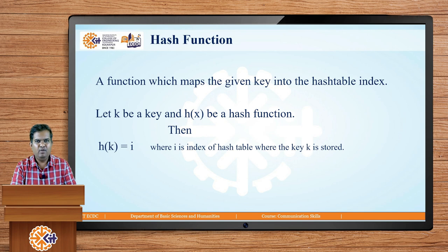The function which maps the given key into a hash table index is called the hash function. To understand this formally: let k be the key and h(x) be the hash function. Then h(k) — the hash function over the key — will give us i, where i is the index at which the corresponding key will be stored inside the hash table. That is how we define the hash function in terms of a mathematical formula.